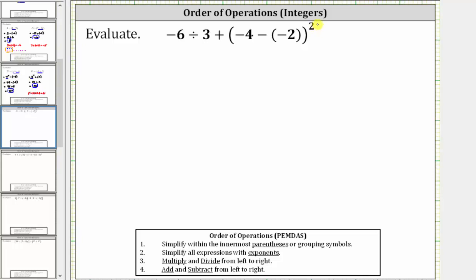We want to evaluate the given expression. The first step is to simplify within the parentheses, which means for the given expression, we need to begin by determining negative four minus negative two.